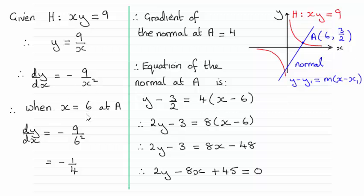So when x equals 6 at A, that will give us the gradient of the tangent, which turns out to be minus a quarter. Using the perpendicular gradient rule, just taking the negative reciprocal of minus a quarter, gives us a gradient of the normal as being 4.